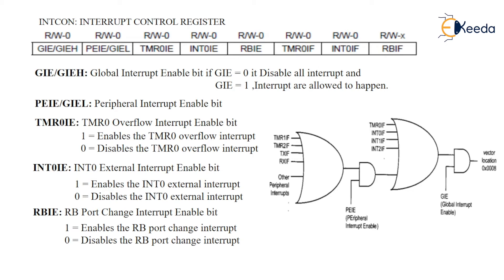When we power on the microcontroller, all interrupts are masked on power-on reset. If we reset the microcontroller — there are two types of reset: software reset and hardware reset. In hardware reset, if we externally apply the reset, the microcontroller starts all addresses from 0x00 and the interrupts will be masked, meaning it neglects all interrupts.